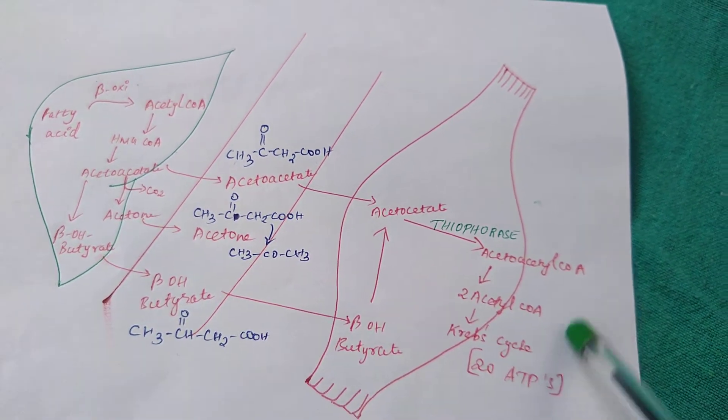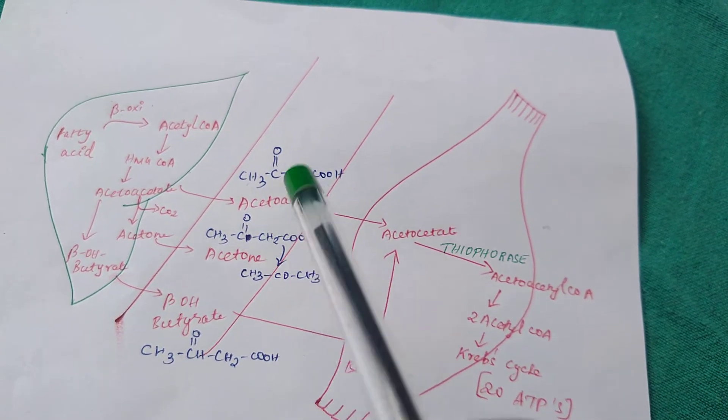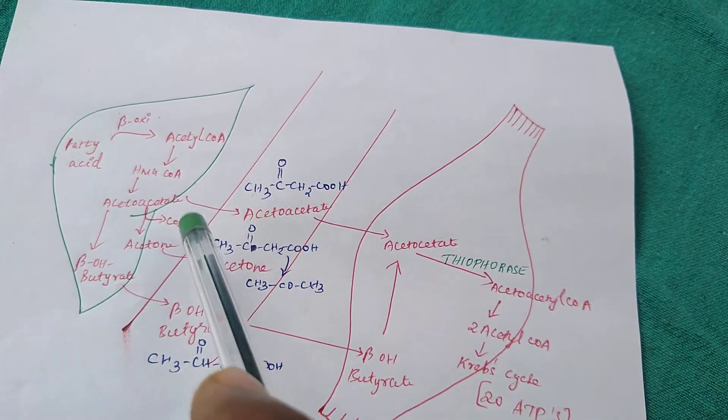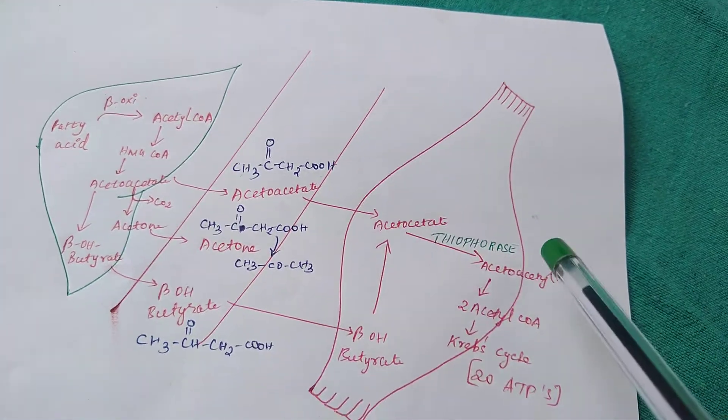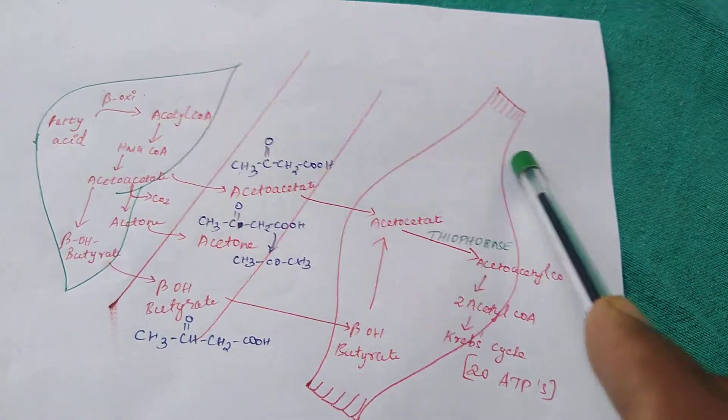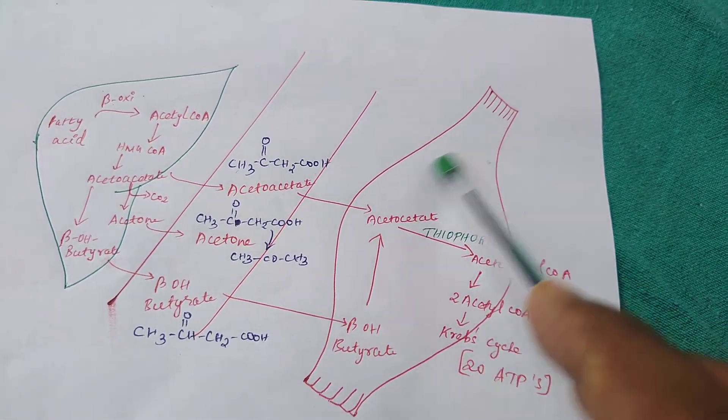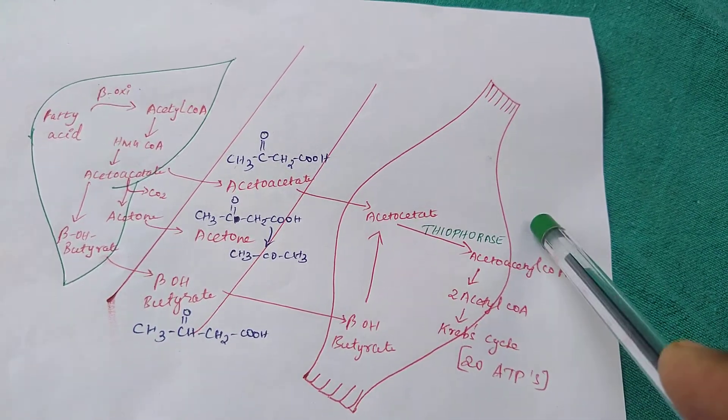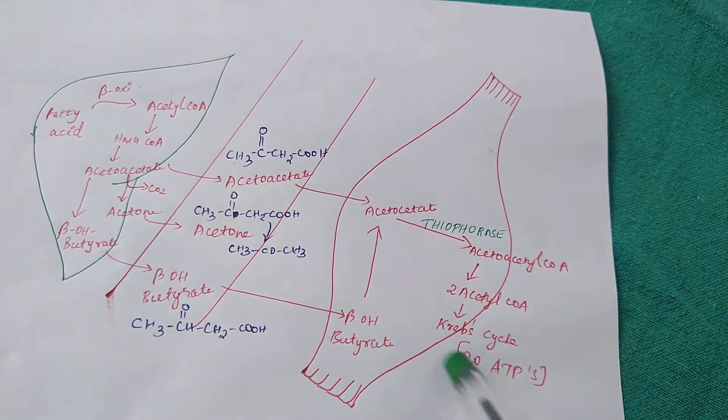Ketone body is also an energy-providing substance that our body normally produces after 90 minutes of each meal. It's being loved by our peripheral muscles and adipose tissues to take up ATPs from ketone bodies.